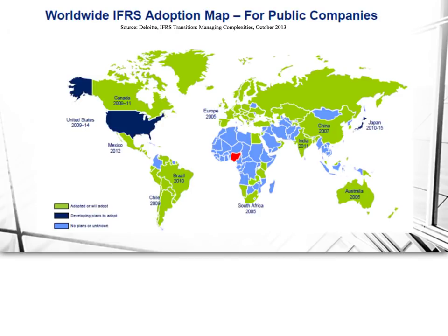Here is a map prepared by Deloitte, a big four accounting firm, showing the adoption of IFRS. Everything in green represents countries that have adopted the international standards. If you look at who hasn't adopted them, there's really one glaring exception among the modern developed countries — and that's us. We are in the process, developing plans to adopt, and so we are on the way toward convergence.